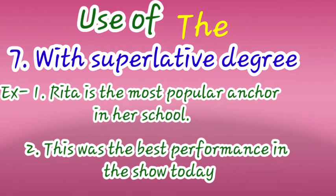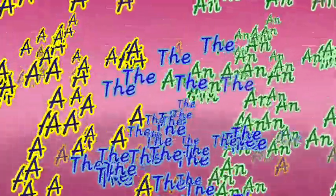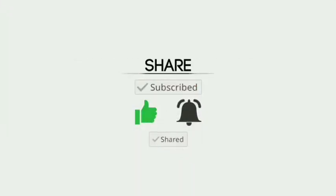The seventh use of 'the' is with the superlative degree. Before superlative degree we use 'the.' For example: 'Rita is the most popular anchor in her school.' Second example: 'This was the best performance in the show today.' Both 'best' and 'most' are superlative degrees, so we use 'the' before both. These are the articles — use of a, an, and the. I hope you understand this video. Thank you. Please like, subscribe, and share this channel.